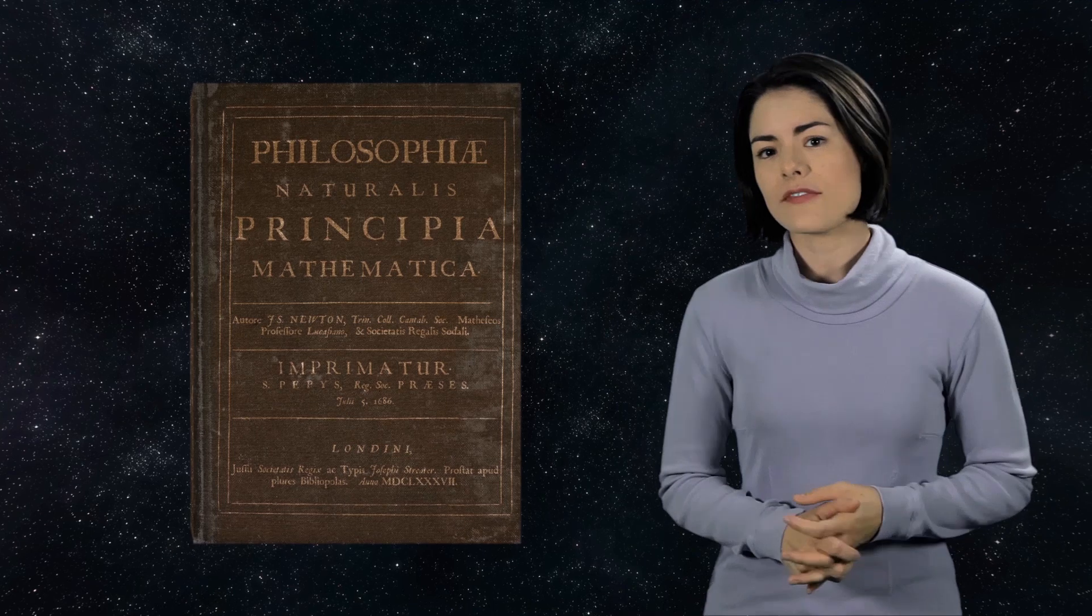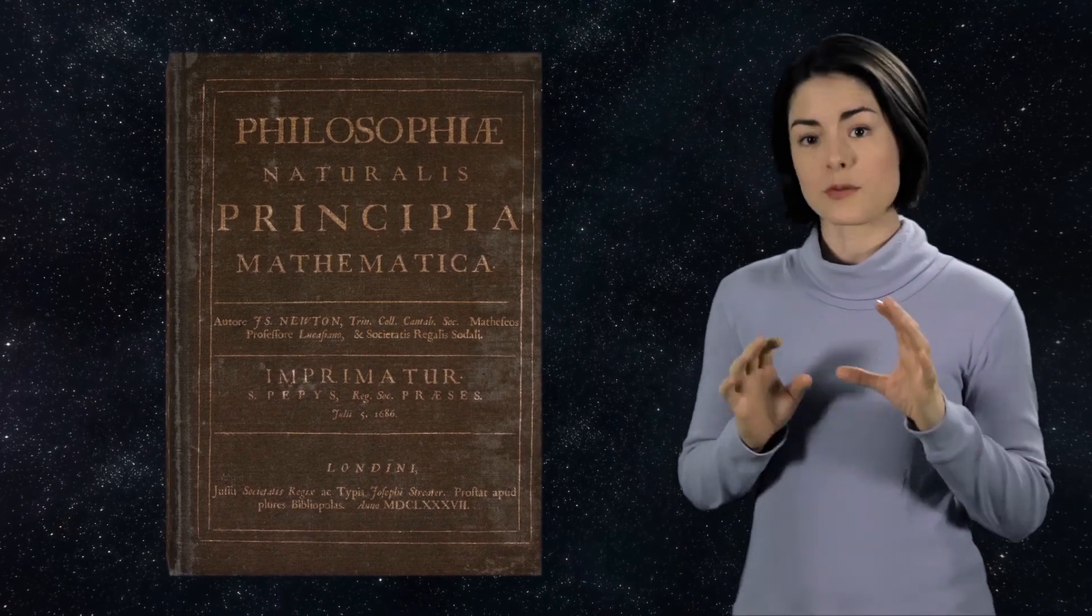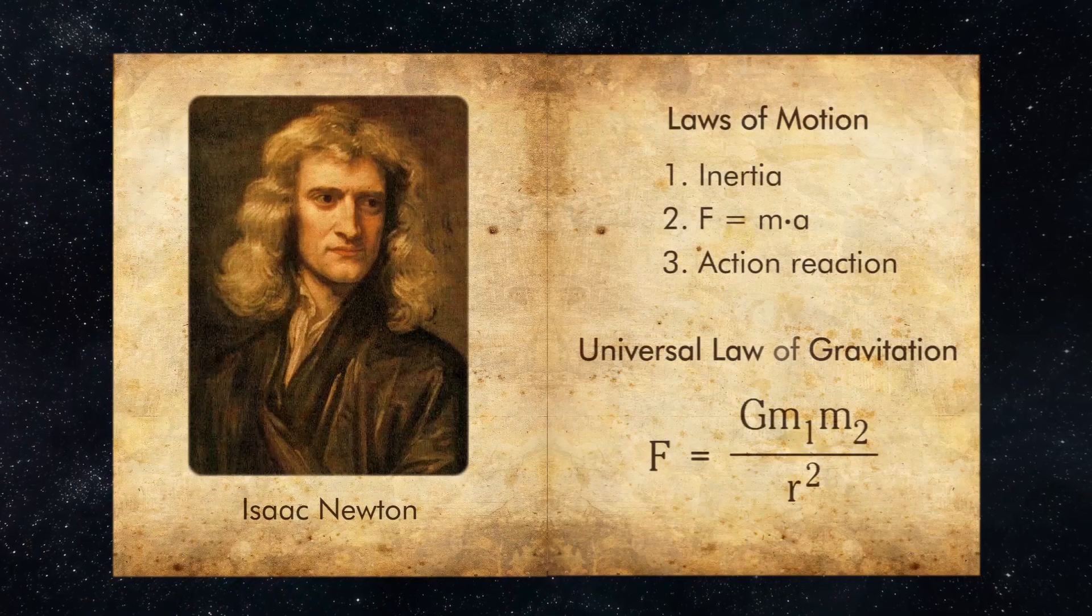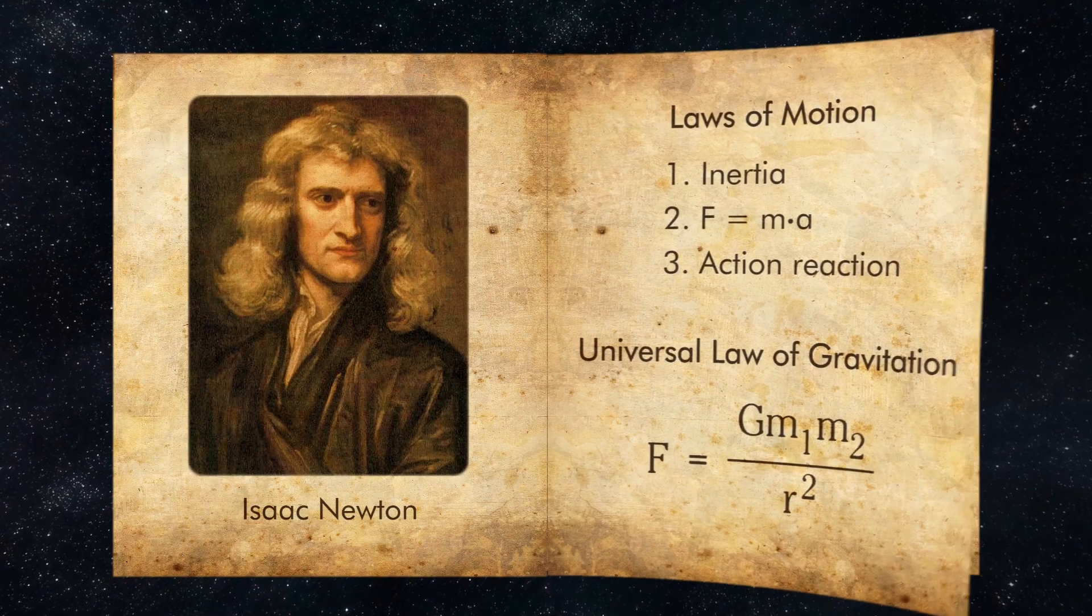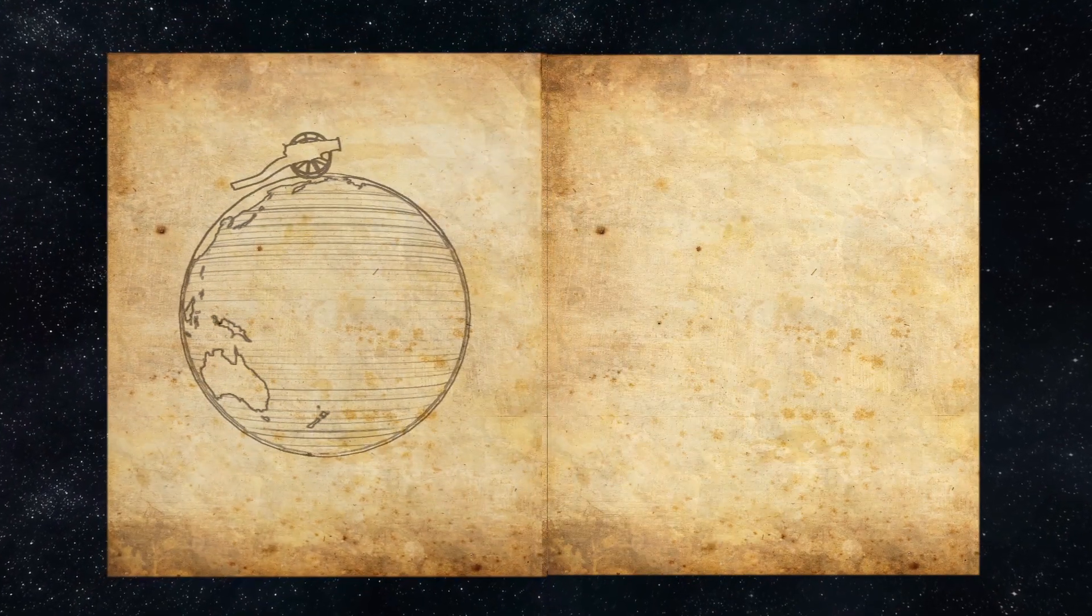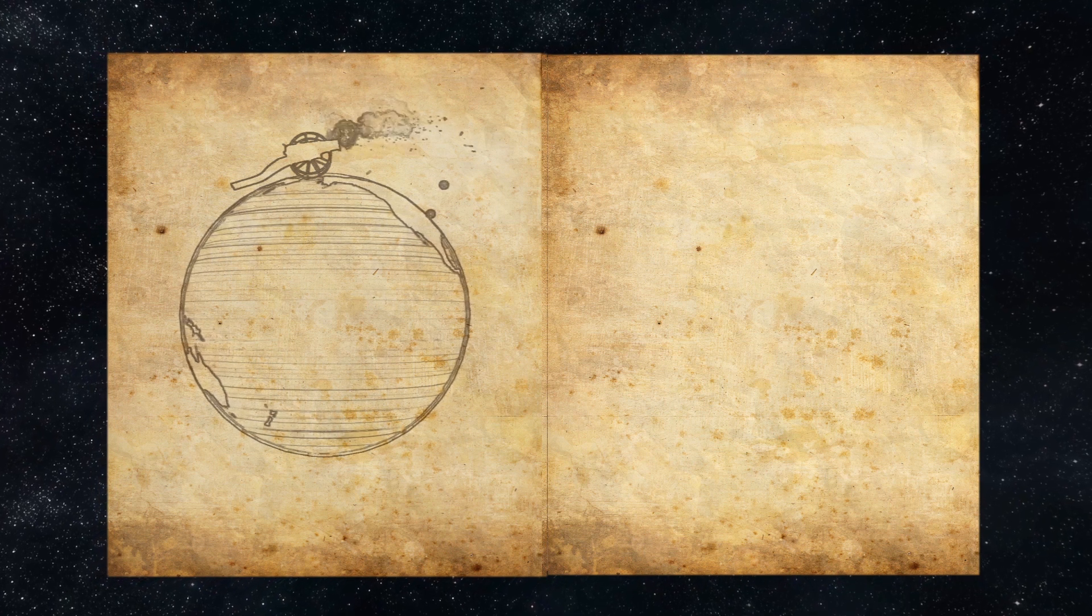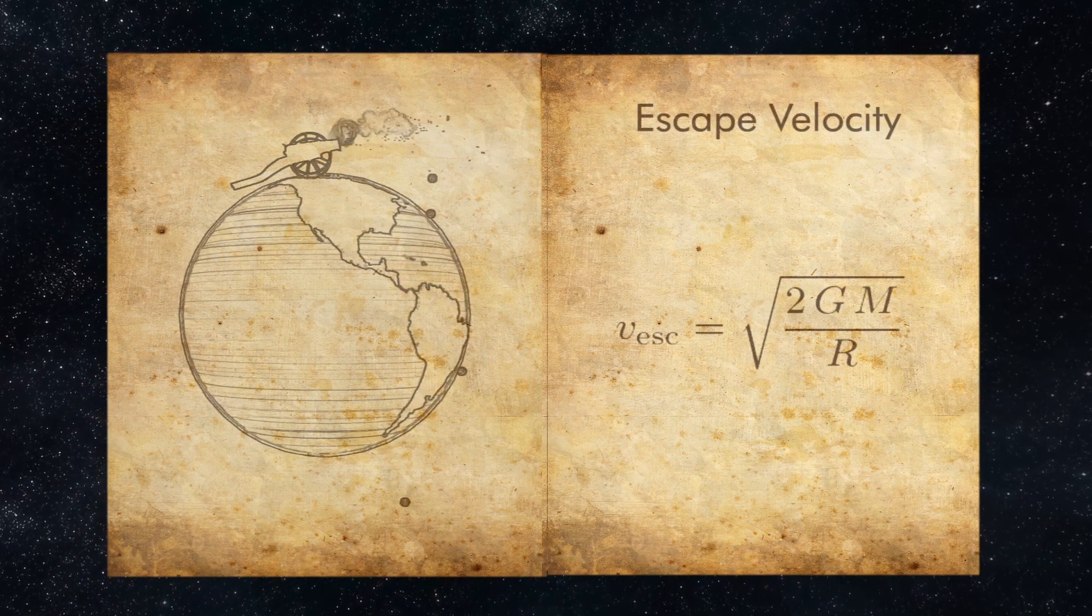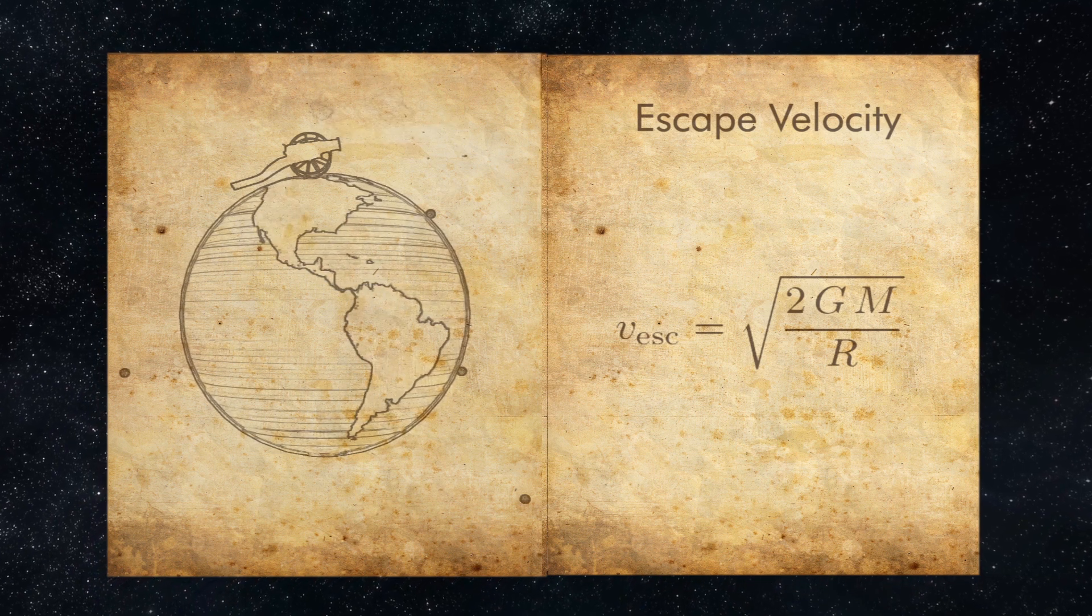The idea of a black hole originated hundreds of years ago. In 1687, Isaac Newton published his landmark work known as the Principia. Here, he detailed his laws of motion and the universal law of gravitation. Using a thought experiment involving a cannon placed on a very tall mountain, Newton derived the notion of escape velocity. This is the launch speed required to break free from the pull of gravity.